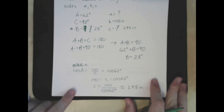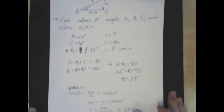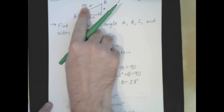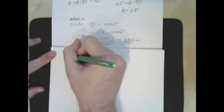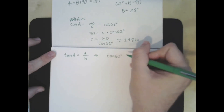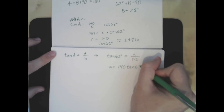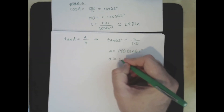We found B = 28 degrees and c ≈ 298 inches. For the last step, since 298 is an approximation, we should use the exact known values to find side a. We use tangent of A: tangent of 62° = little a over little b = a over 140. Solving for a gives a = 140 times tangent 62°, which is approximately 263 inches.